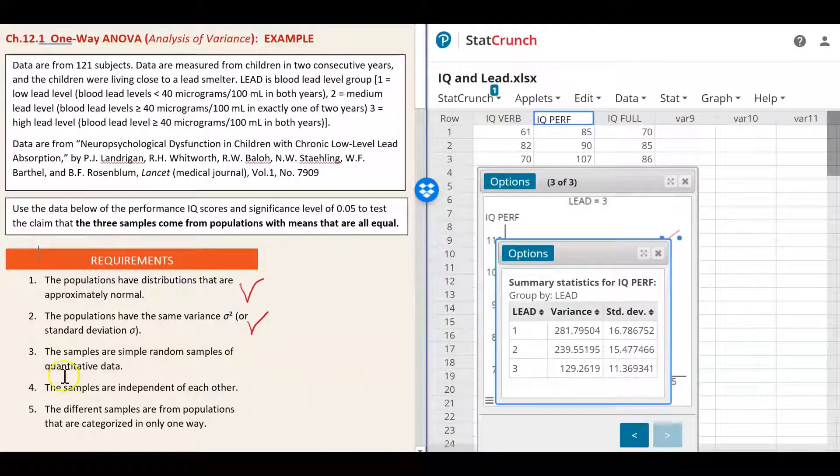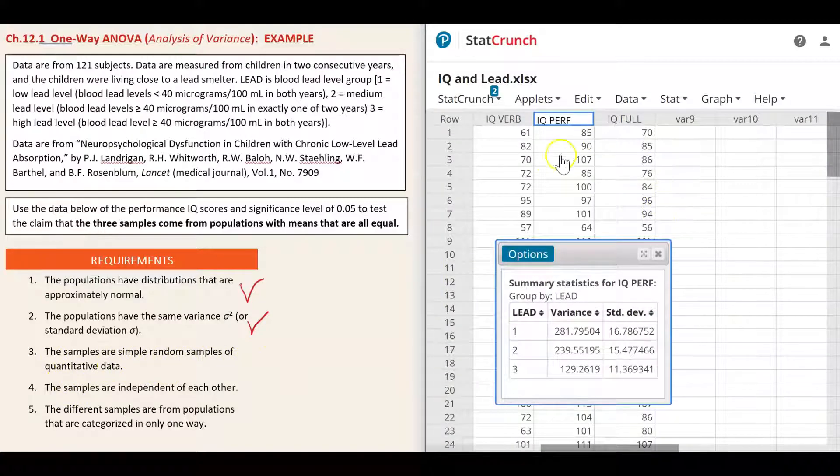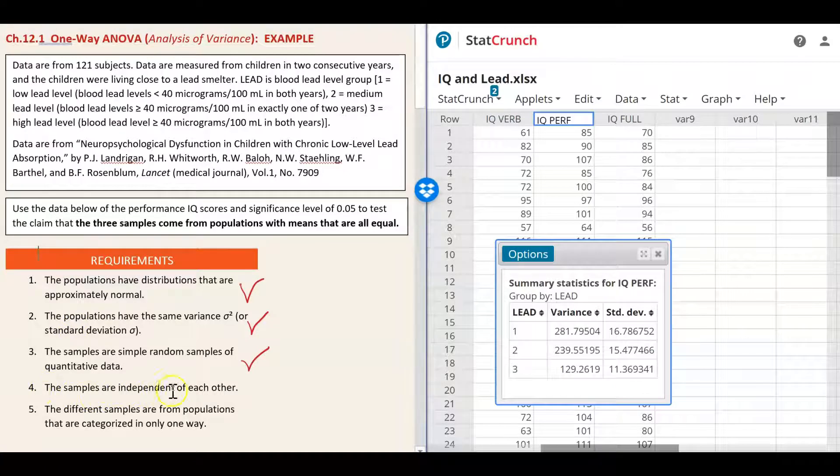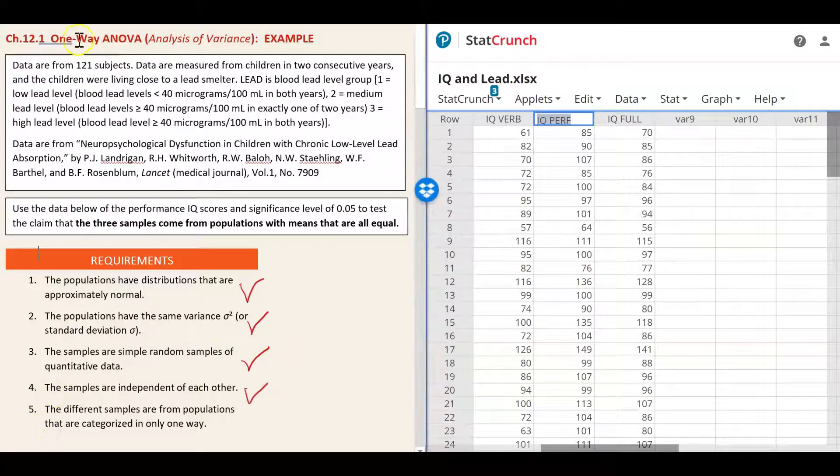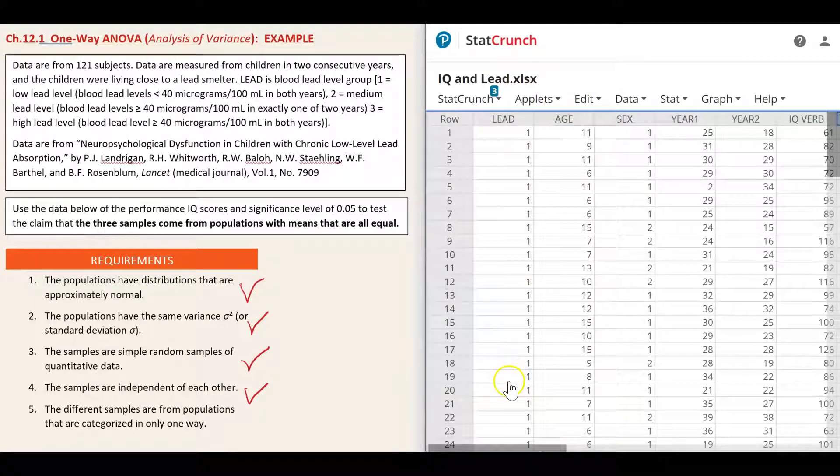The data are quantitative and on the basis of the study design we can treat the samples as simple random samples. The requirement is also met. Requirement number four: the samples are independent of each other. The samples are independent of each other. The performance IQ scores are not matched in any way. In the last requirement for one-way ANOVA test: the different samples are from populations that are categorized in only one way. The three samples are from the populations categorized according to the single factor of lead level: low, medium and high.